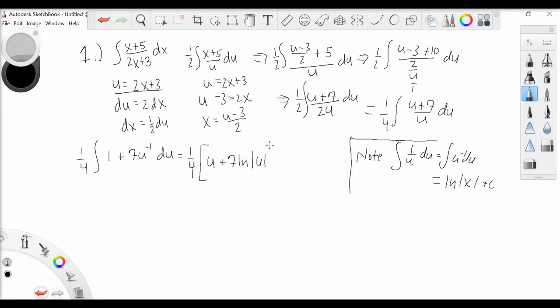And we can distribute, so u over 4 plus 7 over 4 ln of u.